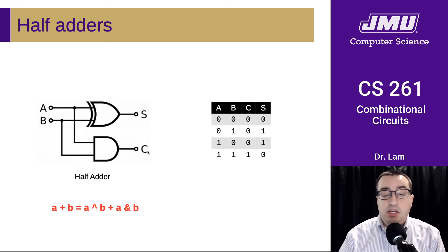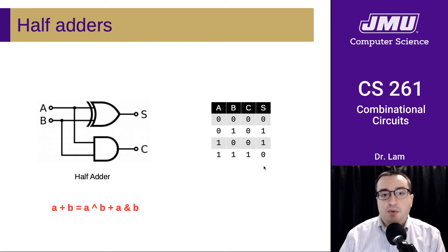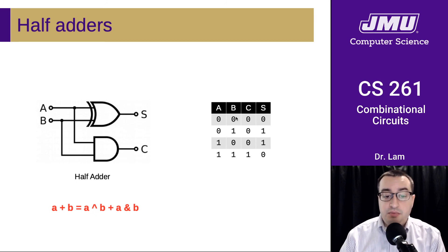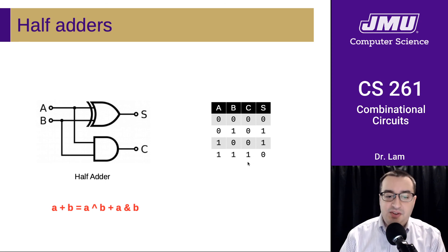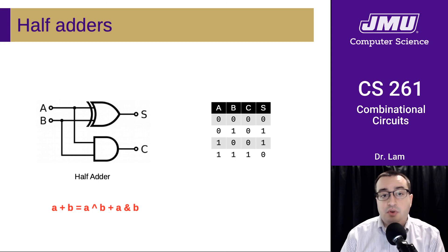If you think about this and look at the title of the slide, you'll realize this is doing an addition — a one-bit addition. 0 plus 0 is 0. 0 plus 1 is 1. 1 plus 0 is 1. And 1 plus 1 is 0 with a 1 carry. If you write the columns this way and read it as a binary number from left to right, it's a 2 — so 1 plus 1 equals 2. This is called a half adder because it does a partial addition. That's why we call the outputs the sum S and the carry C.